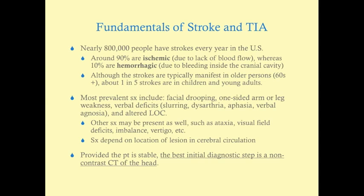For differential diagnosis, what else could it be besides stroke? It depends on the symptoms. If a patient comes in with vertigo, you could include Meniere's syndrome or an ear infection. If they have simply facial drooping, you could include Bell's palsy. Any of these symptoms could also represent Todd's paralysis — a post-ictal state after a seizure that can produce focal neurologic deficits that are generally temporary. The initial diagnostic step is a non-contrast CT of the head.